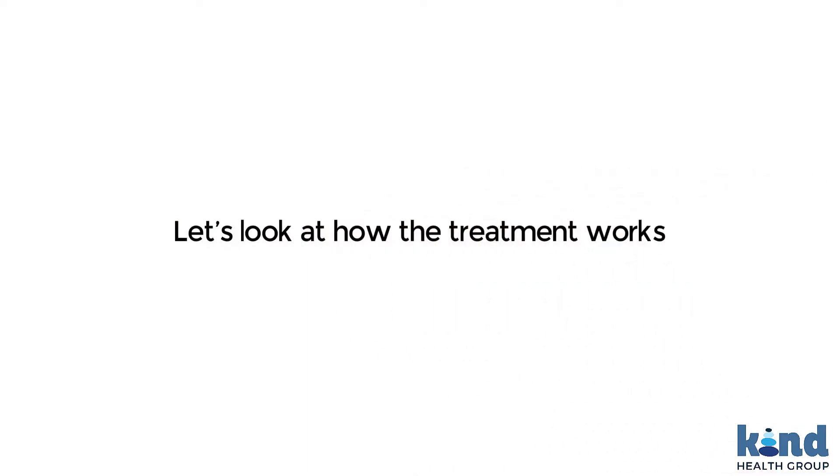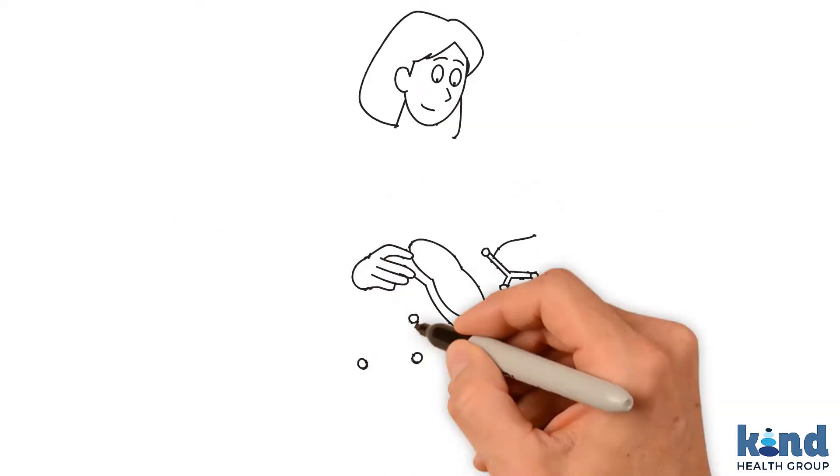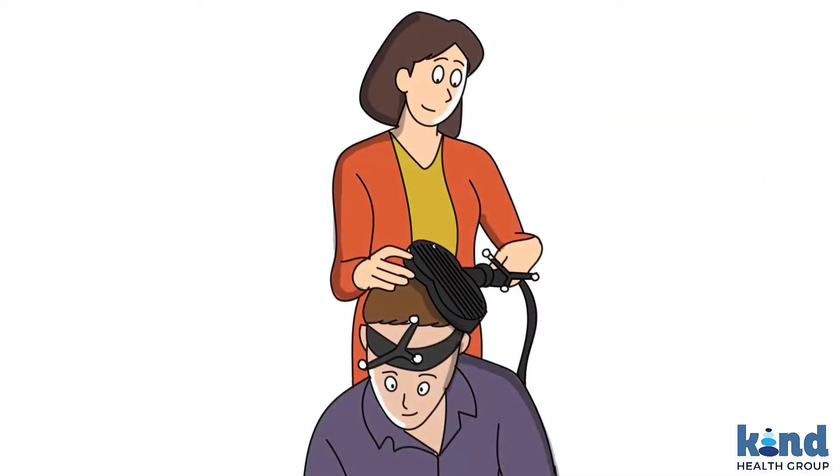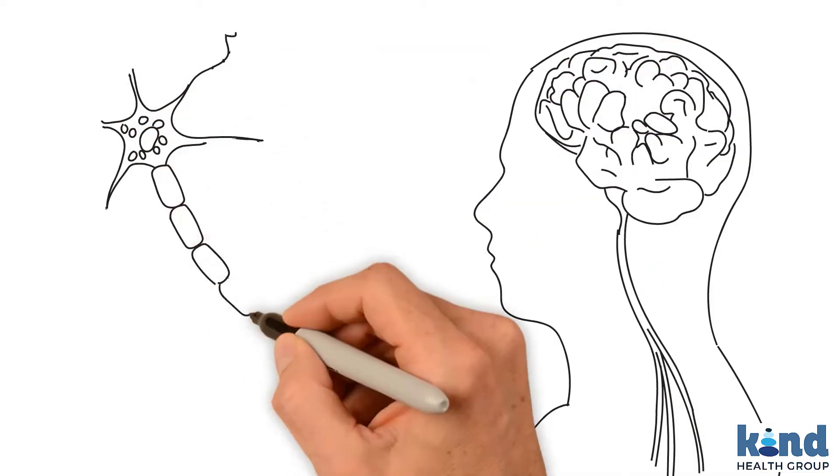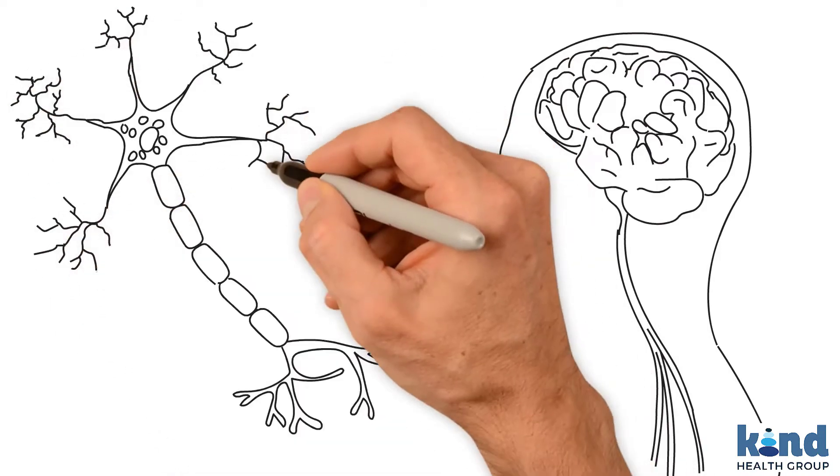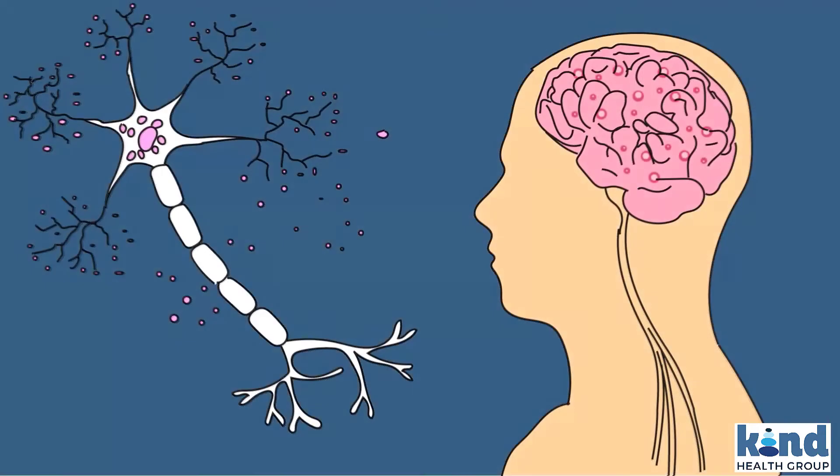Let's look at how the treatment works. TMS uses a magnetic coil placed gently over the head. This delivers focused energy to stimulate the neurons in the brain to turn on. And like dominoes, those neurons send messages causing other neurons to fire, which cause other neurons to fire and so on.